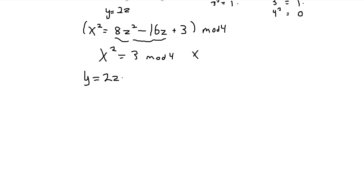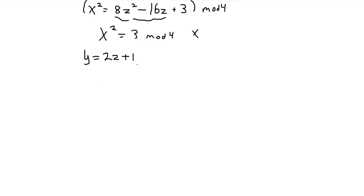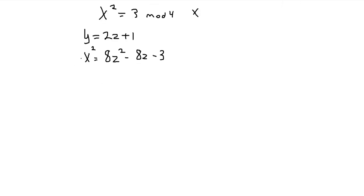So let's say y is equal to 2z plus 1. And so let's plug that back in here. Alright, so now we get that x squared is equal to 8z squared minus 8z minus 3.